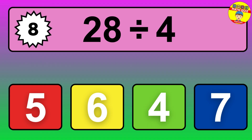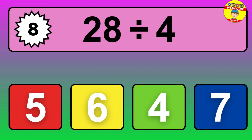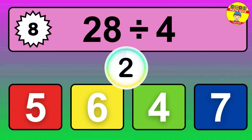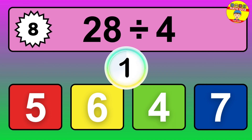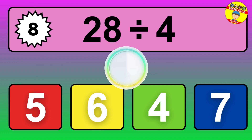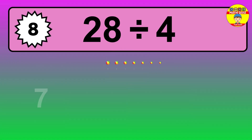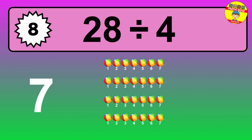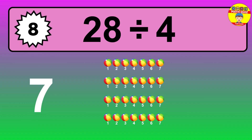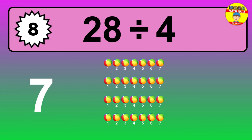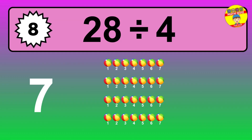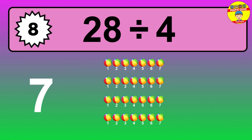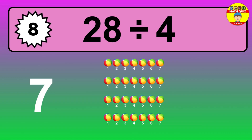28 divided by 4 — time to think. Let's go to the solution. Divide the number 28 by 4. Each group contains 4 units, so dividing 28 by 4 results in 7 equal groups. Thus, the result is 28 divided by 4 equals 7.